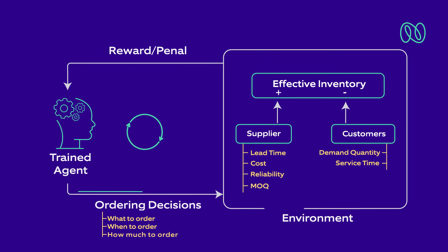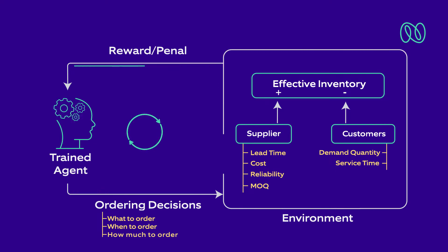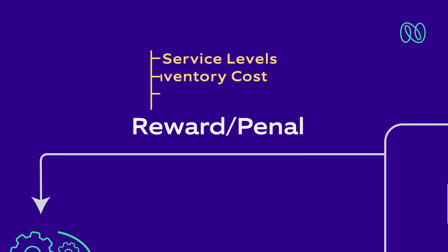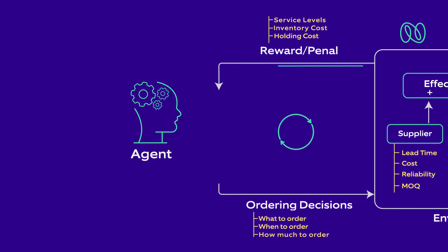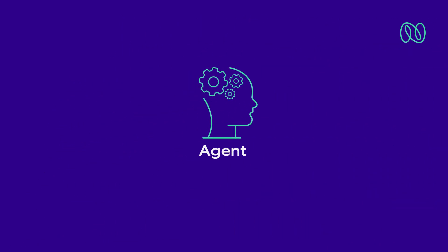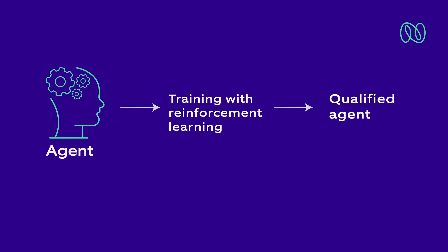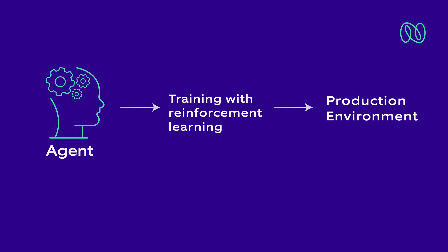Both demand and supply-side uncertainties exist. As a result of a certain ordering pattern, the reward or penalty is awarded to the agent in the form of service levels achieved, inventory cost, holding costs, etc. This is how we train an AI agent in a virtual environment. Only once the agent is trained and passed the tests does it qualify as a trained agent. The AI agent is then put into a production environment to support inventory management decisions.